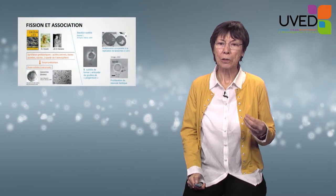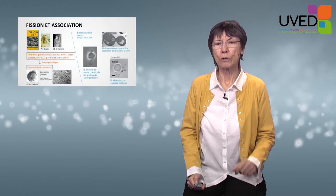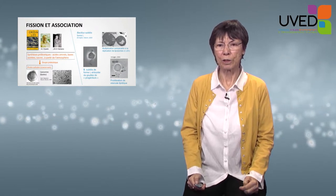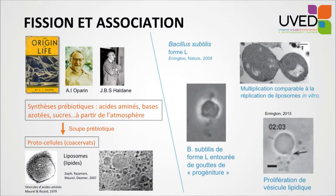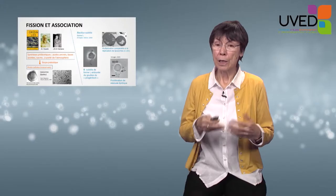Alexandra Oparin was the first, in the 1920s, to attempt to define the context in which life formed on Earth. He said that prebiotic synthesis — synthesis which happened before life — produced living biomonomers: elementary bricks such as amino acids, nitrogen bases, nucleic acids, and sugars, formed from constituents in the atmosphere of primitive Earth. Haldane, a geneticist, also contributed a few years later, proposing that molecules formed in the atmosphere deposited themselves in the ocean to form a primitive ocean — a kind of prebiotic soup — in which these compounds came together to form the first protocells, which Oparin called coacervates.